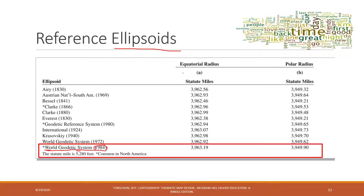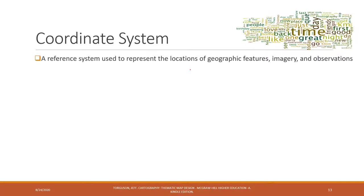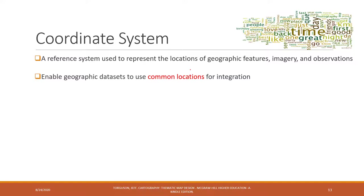Now that we have the baseline — the ellipsoid — how can we identify the locations of objects on the Earth? That is where we have the coordinate system. A coordinate system is a reference system based on the ellipsoid that allows us to represent the locations of any geographic features, images, or observations — such as a building, a river, a road, a piece of land, or human activities. It is very important in GIS: when we import any spatial data into GIS, we must make sure that the dataset has a coordinate system.